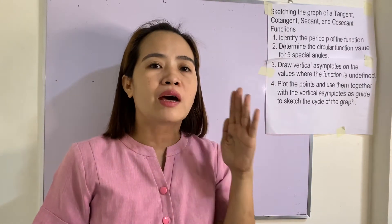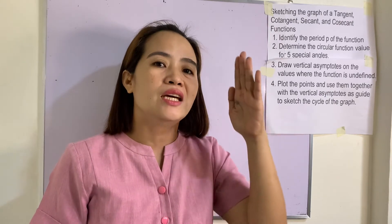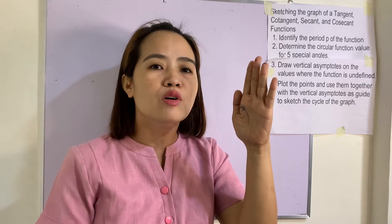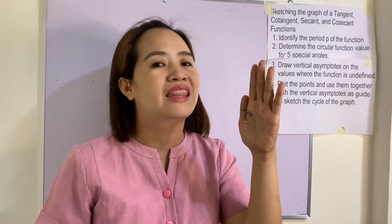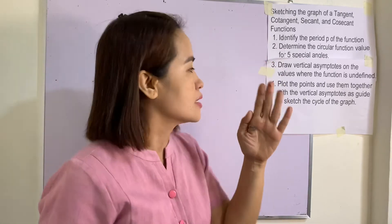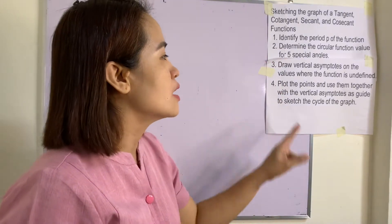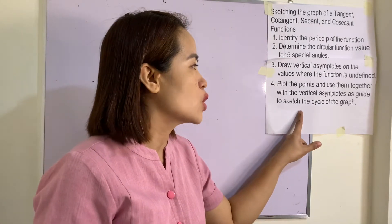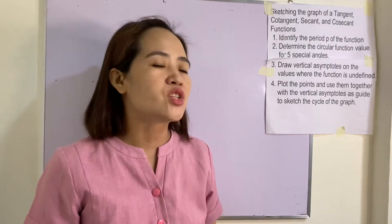Remember that a vertical asymptote is a vertical line which the graph moves closer and closer to but never touches. Number four: plot the points and use them together with the vertical asymptotes as a guide to sketch the cycle of the graph.